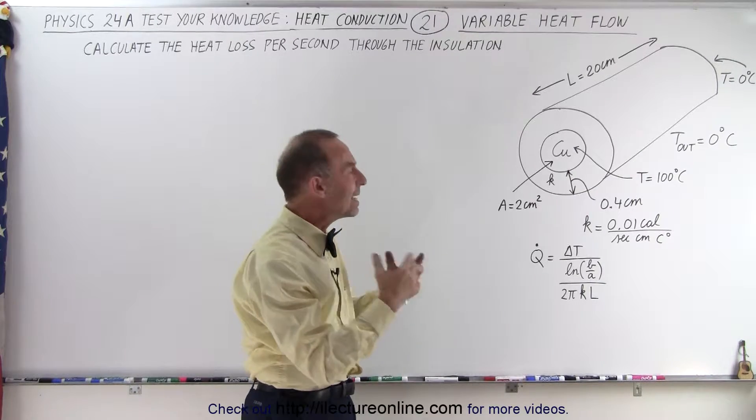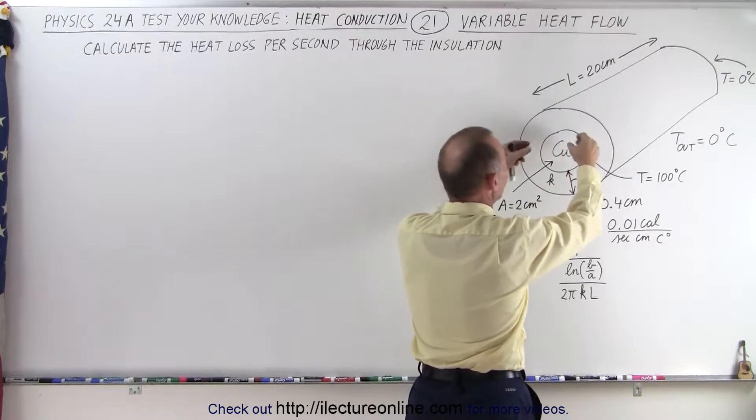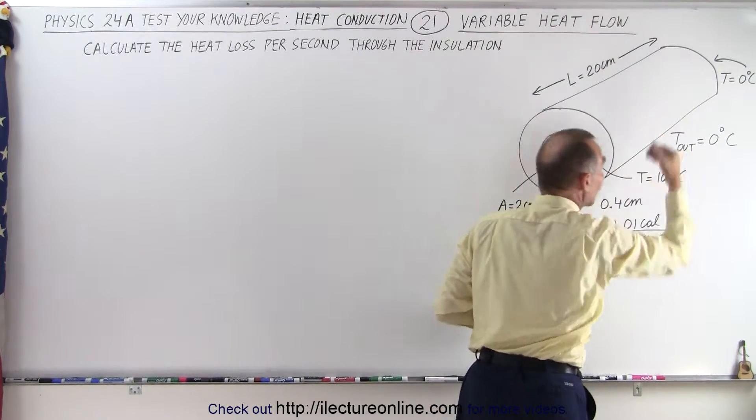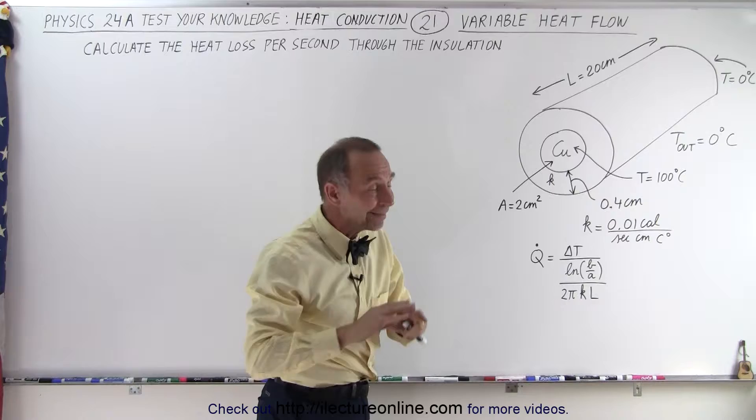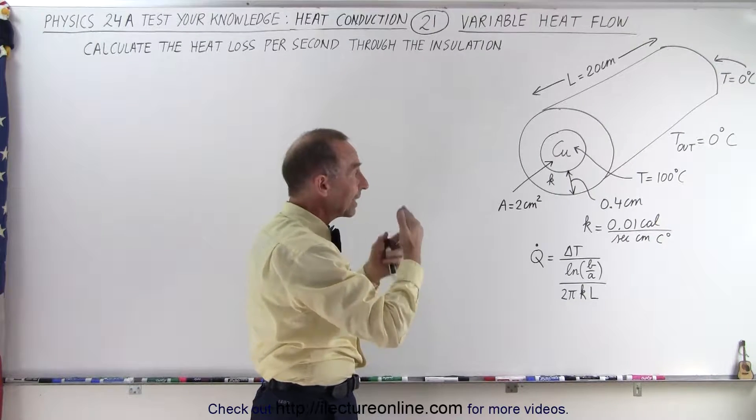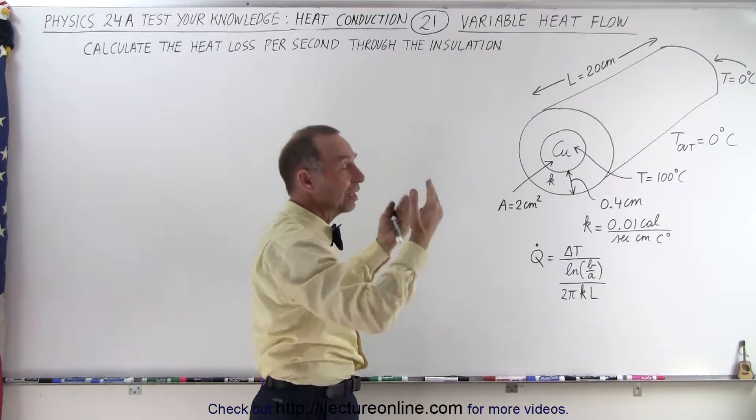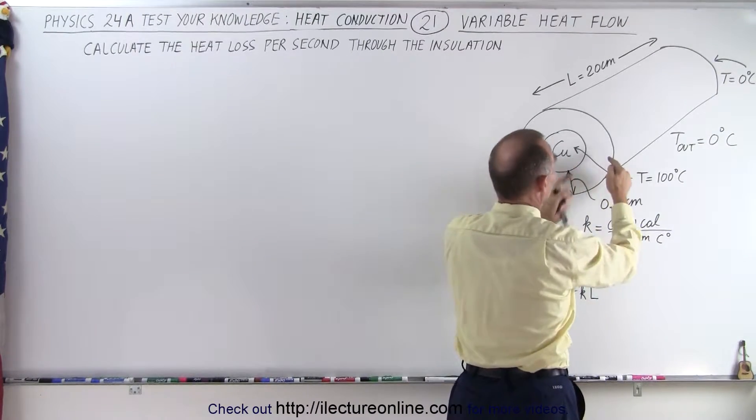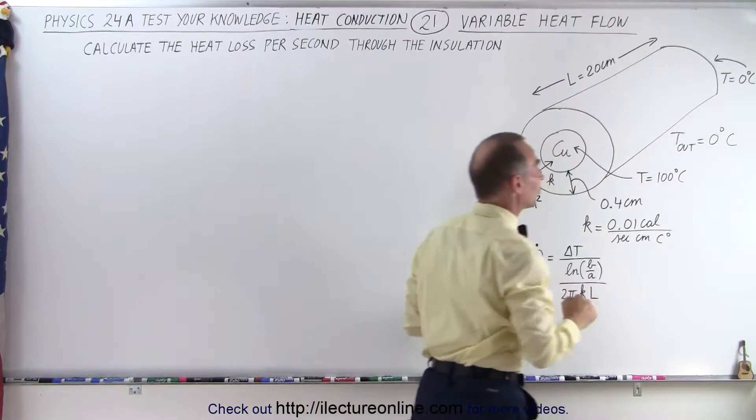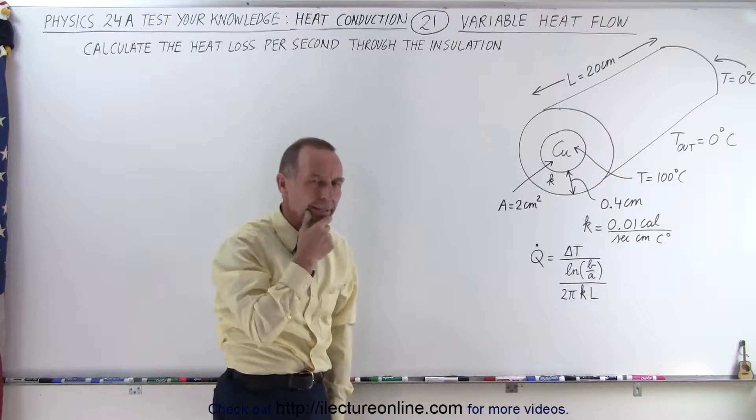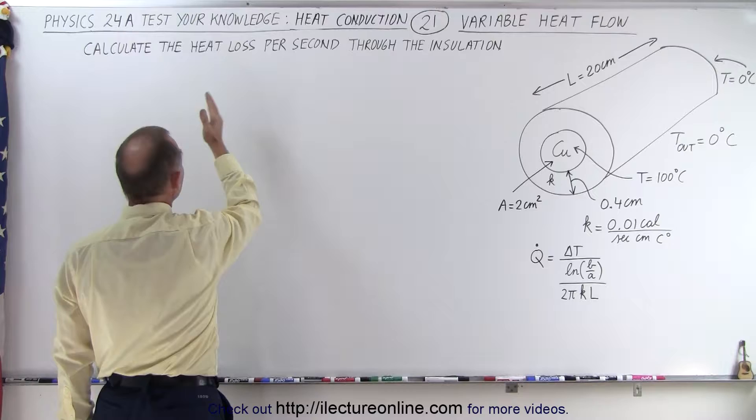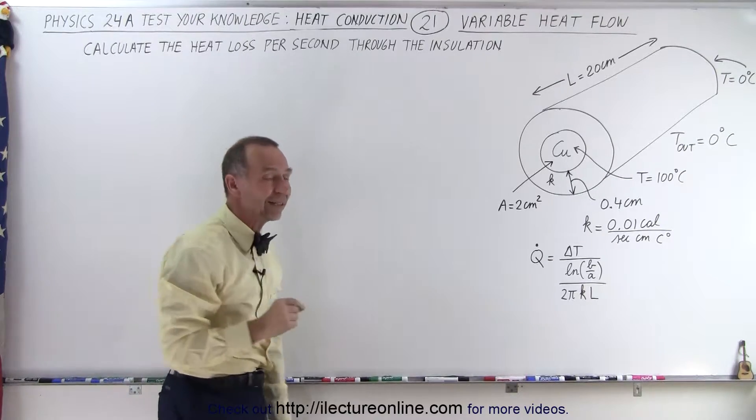That means that the heat flow from the bar to the outside through the insulating material on this end is much greater than it is on that end. In other words, Q̇ is not a constant. The amount of heat per unit time flowing through the insulation depends upon the temperature difference which is much greater here, 100 degrees centigrade, and much smaller here, down to 0 degrees centigrade. So we're supposed to find and calculate the heat loss per second through the insulation.